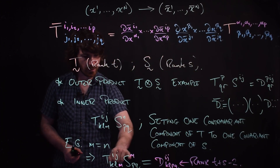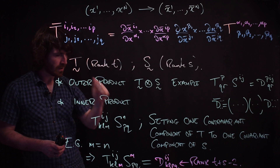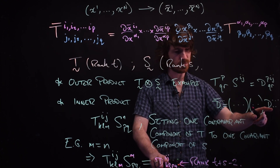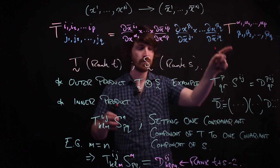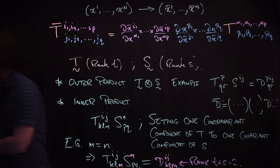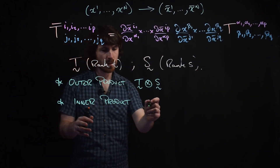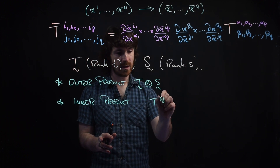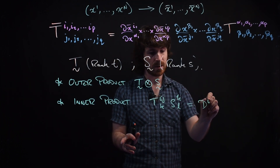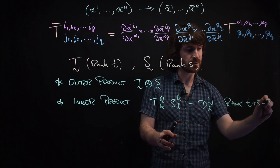This gives a different tensor D of type (2,2), with indices K, L, P, Q. So the inner product T^{IJ}_{KS} · S^K_L equals D^{IJ}_L, a rank t plus s minus 2 tensor. The minus 2 arises because we've lost one index from each tensor through the contraction.